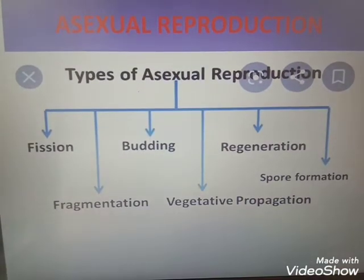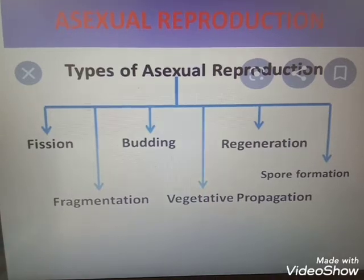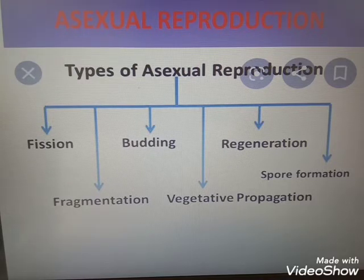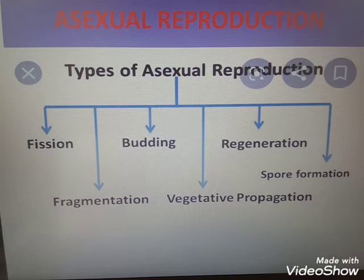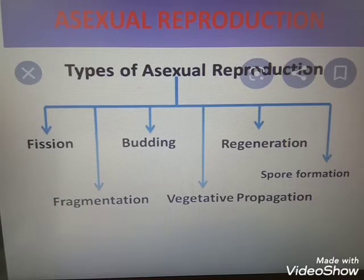Now we discuss asexual reproduction. The young ones produced by asexual reproduction are genetically and morphologically identical — they are exact copies of the parents, otherwise called clones. Just like a photocopy, the offspring of asexual reproduction are clones of their parents, both genetically and morphologically.